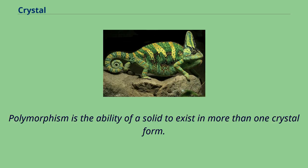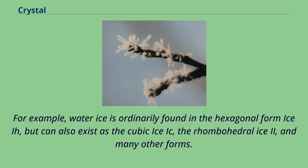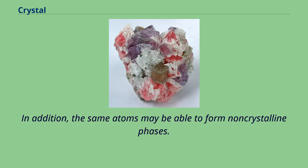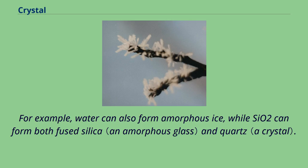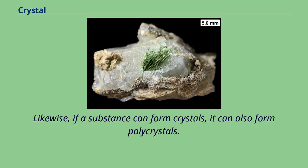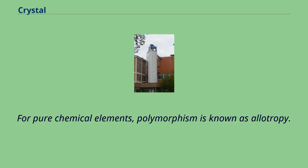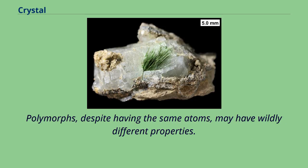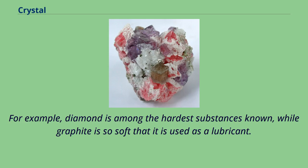For example, water ice is ordinarily found in the hexagonal form (ice I), but can also exist as the cubic form (ice Ic), the rhombohedral ice II, and many other forms. The different polymorphs are usually called different phases. In addition, the same atoms may be able to form non-crystalline phases — for example, water can also form amorphous ice, while CO2 can form both fused silica and quartz. If a substance can form crystals, it can also form polycrystals. For pure chemical elements, polymorphism is known as allotropy. Diamond and graphite are two crystalline forms of carbon, while amorphous carbon is a non-crystalline form. Polymorphs, despite having the same atoms, may have wildly different properties — diamond is among the hardest substances known, while graphite is so soft that it is used as a lubricant. Polyamorphism is a similar phenomenon where the same atoms can exist in more than one amorphous solid form.